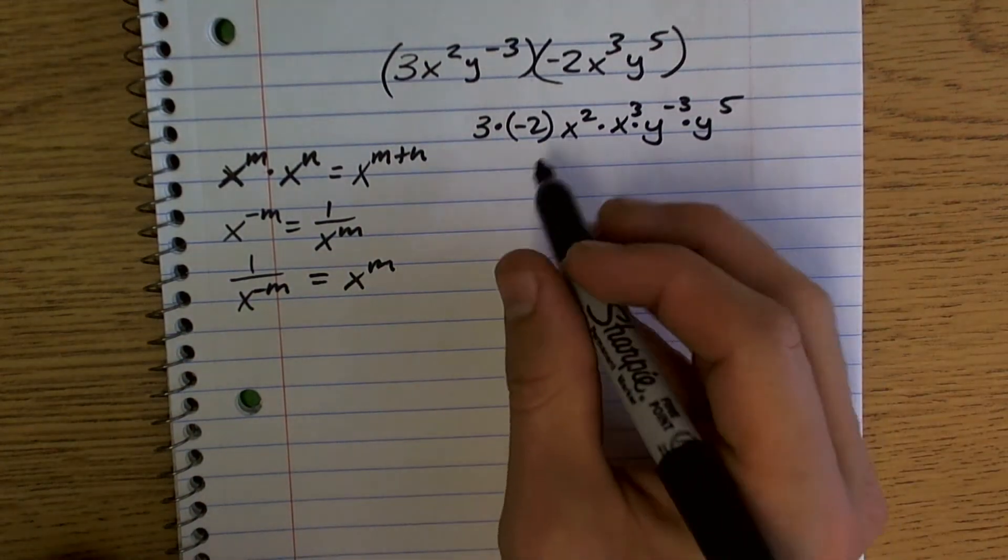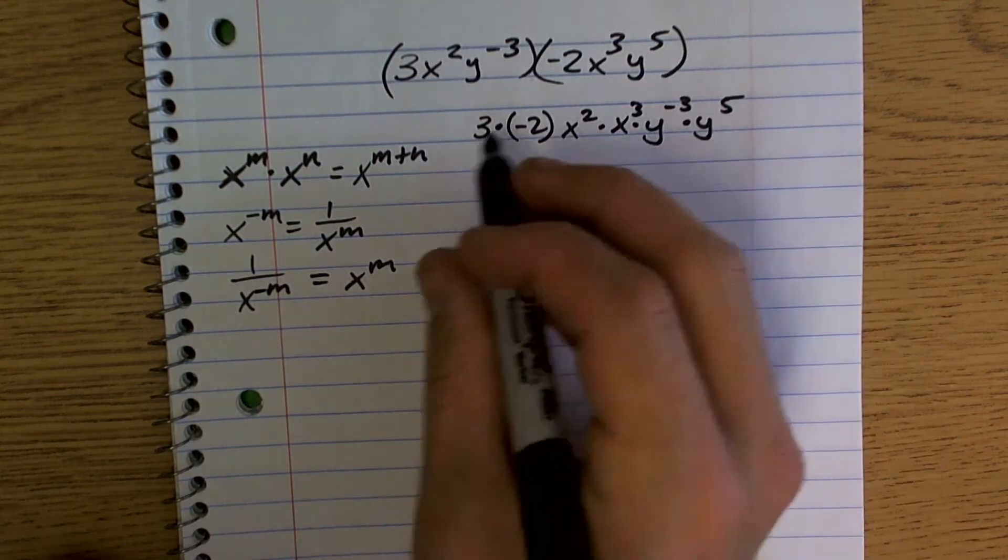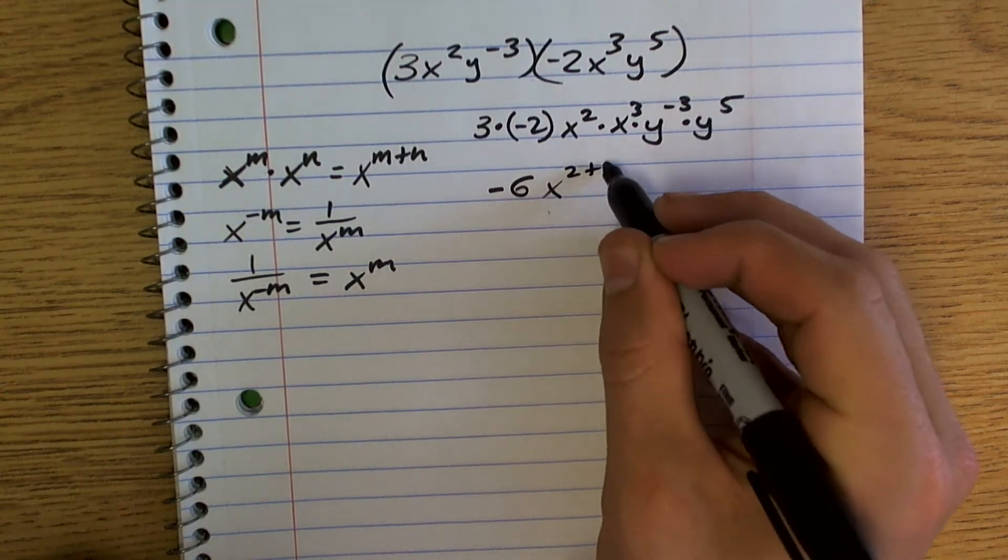Now using my rule of exponents, 3 times negative 2 is going to give me a negative 6. This is going to be, just like following my rule of exponents, x to the 2 plus 3.